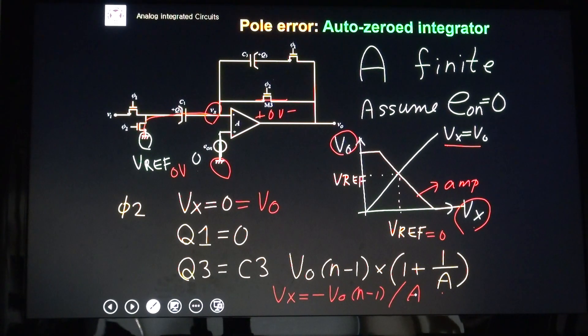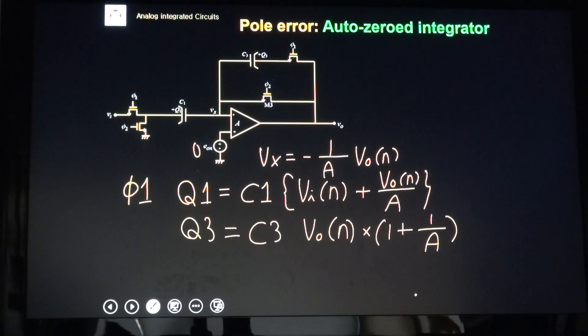Let's go to the φ1 phase. φ1 phase, Q1 samples input voltage, VI. And then, here, my VX is same as minus one over A times VON. My VO is VON at the end of φ1 phase. So, Q1 is C1 VI minus VX. So, I got this equation. How about the Q3? Q3 is C3 times VON minus VX. We got this equation.